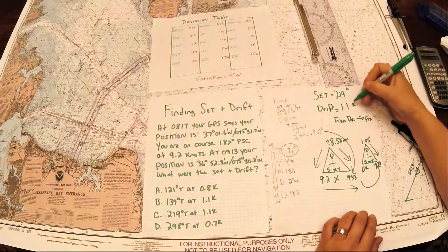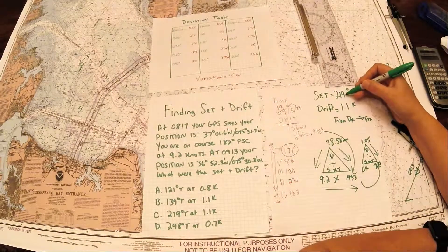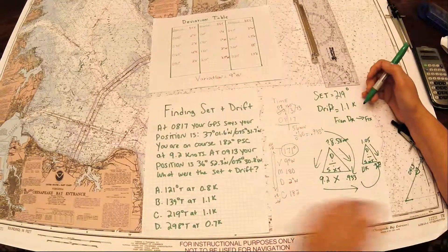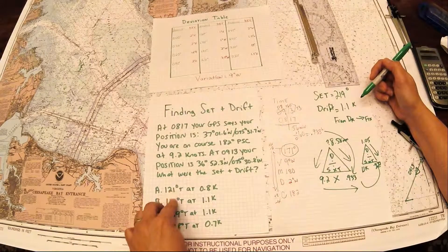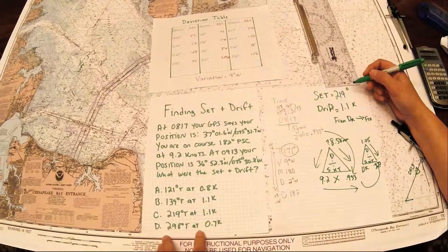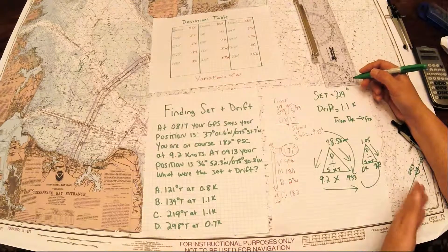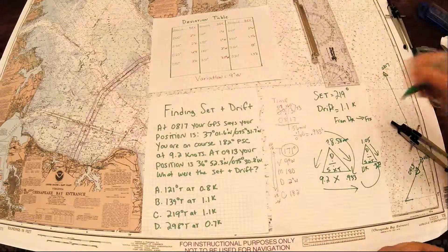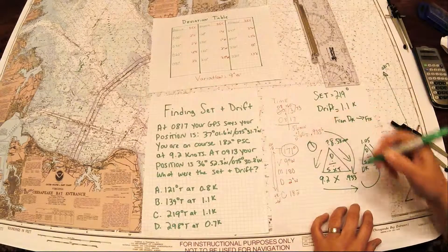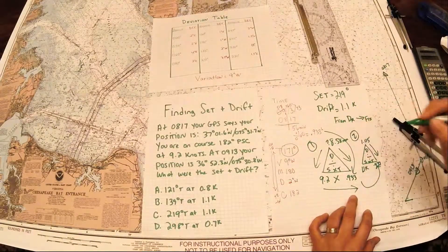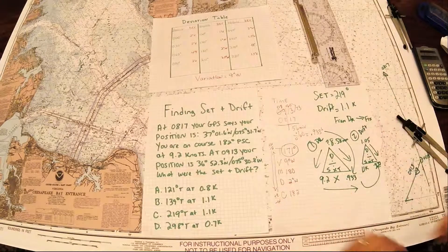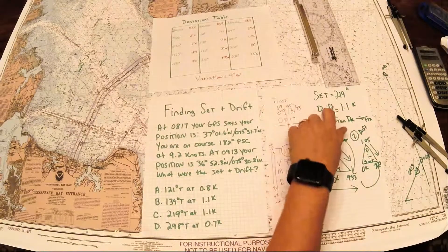Now you're not always going to get dead on these. I would say if you're within 5 degrees and a tenth or so of the knots, you'll probably choose the right answer. Typically these problems have two that are off in the other direction, or sometimes the exact reciprocal, and then it'll have one that's close. Or it'll have one that has the distance as the answer, and they're just looking for you to choose that because you forget to do the second DST. One DST is for the DR, the second DST is for the drift. So this is DR, and this is drift.